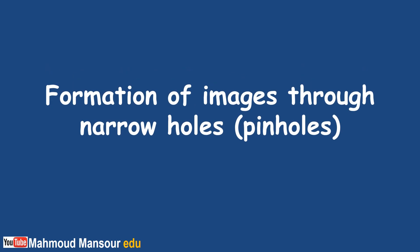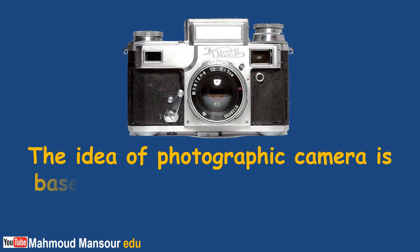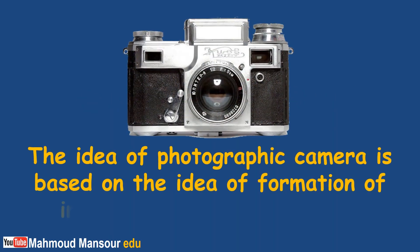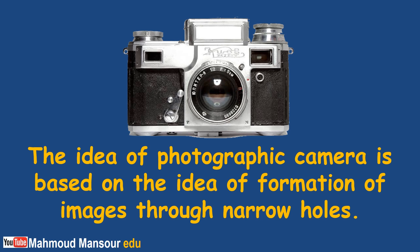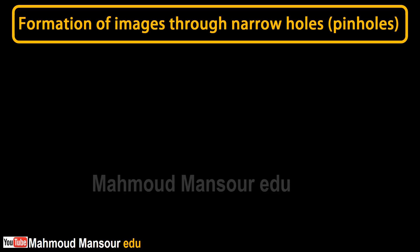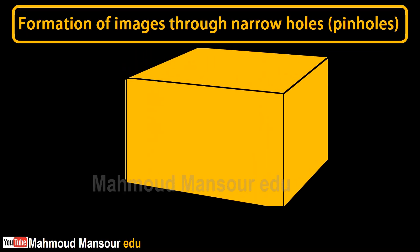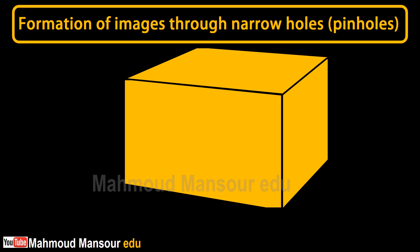Formation of Images Through Narrow Holes or Pinhole. The idea of a photographic camera is based on the formation of images through narrow holes, due to light travelling in straight lines. This activity proves that the formation of images through narrow holes is due to the travelling of light in straight lines.